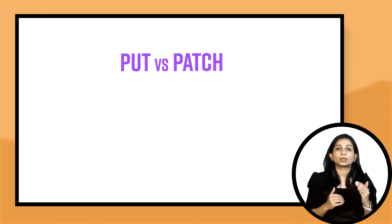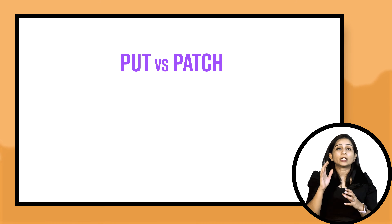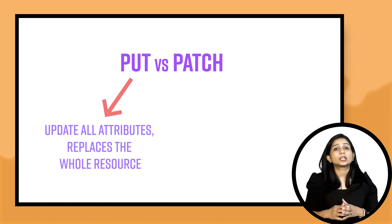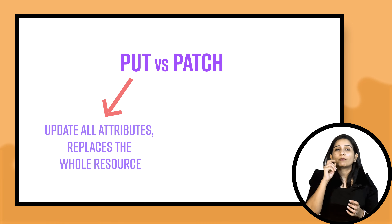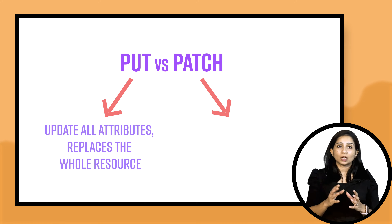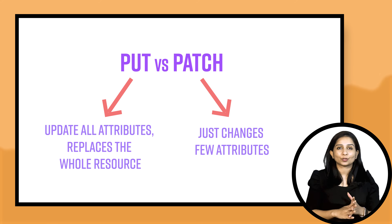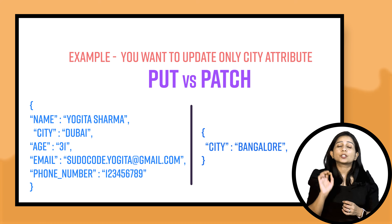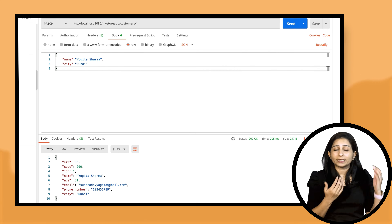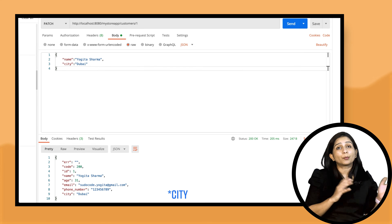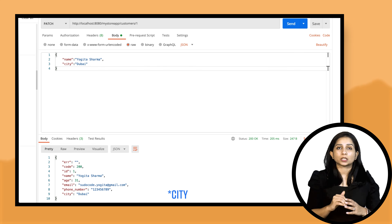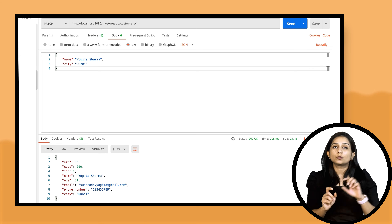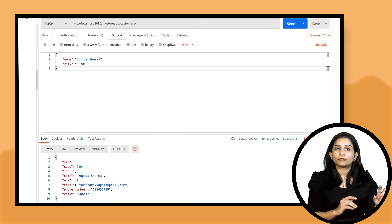Now coming on to PATCH — what is the difference between PUT and PATCH? In PUT, the whole body of the resource is replaced by whatever attributes are sent. Now if you don't want to replace the whole body and just want to modify one or two attributes, you can use PATCH. As the name suggests, it is just patching or changing a few things in the existing resource. For example, if you just want to update the city of a customer, you use the same URI as PUT, use the method PATCH, and just send the changes — if you want to update the city to Dubai, you only send city: Dubai, not the whole customer body.